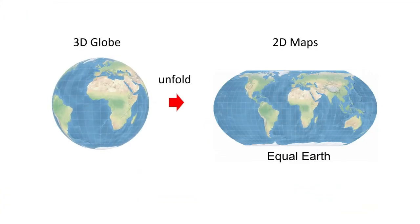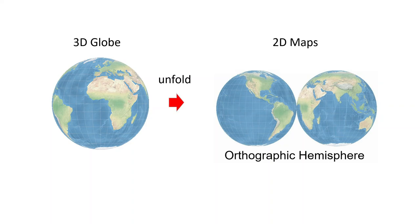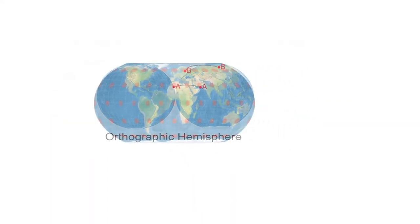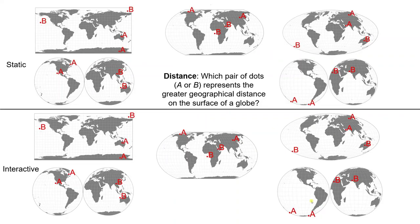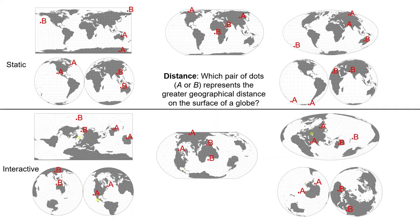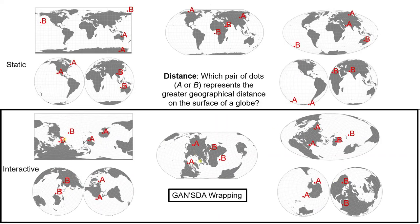There are many methods for folding a 3D globe to a 2D map; however, distortion and visual cuts around the boundary of the display hinder geographic comprehension. How about using interactive wrapping to center the region of interest?